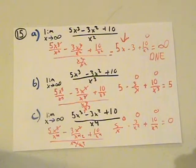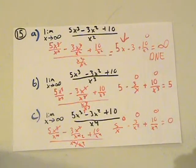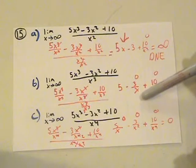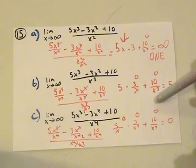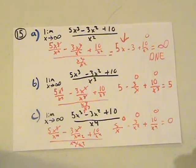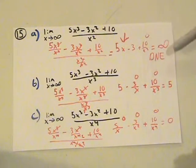For part B, when I multiply it out and simplify, I get 5 minus 3 over x plus 10 over x cubed. This simply equals 5 because 3 over x is just a constant over x, which equals zero, and 10 over x cubed also equals zero. So it ends up equaling 5. This is a horizontal asymptote. Horizontal asymptotes are generally everything except when the numerator's degree is greater — that would be a slant asymptote.